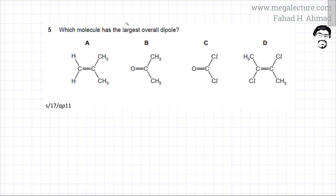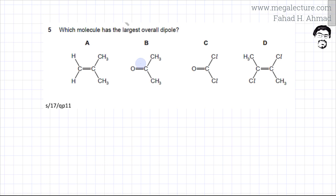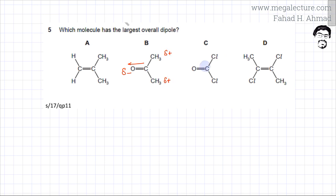Let's now talk about option B. Option B has carbon and hydrogen atoms, but there is also an oxygen atom. Remember, oxygen is very electronegative — it is to the right and top of the periodic table. So oxygen is going to try and pull the electrons closer to it. This side of the molecule will get a partial negative charge because all the electrons are closer to the oxygen atom, while the other side will have a partial positive charge. So this molecule is going to have an overall dipole, because it has a very electronegative atom on one side pulling all the electrons toward it.